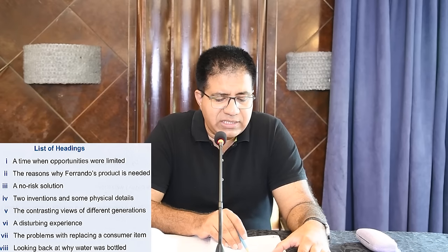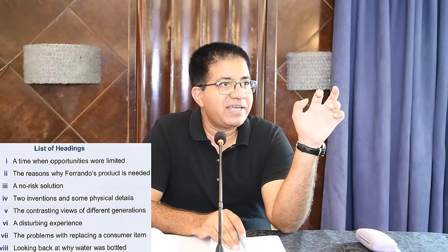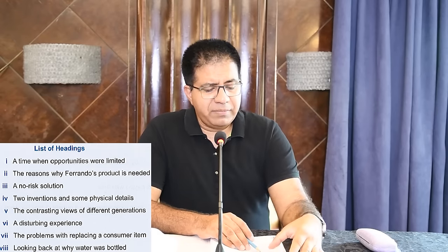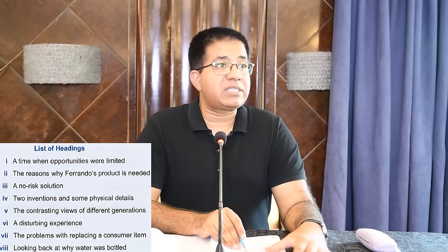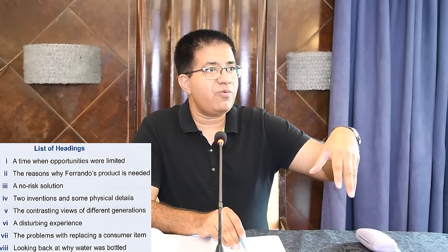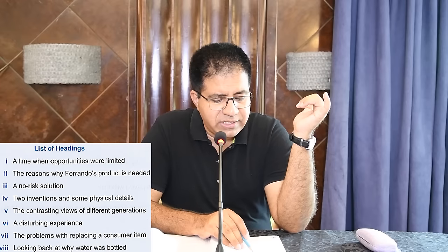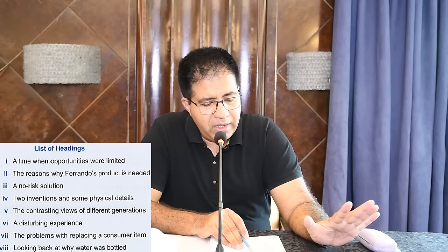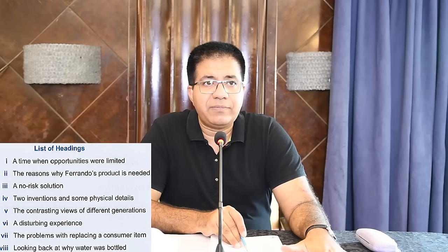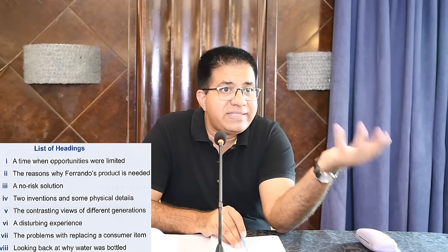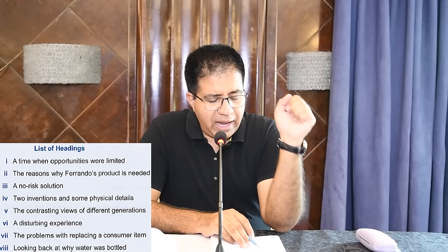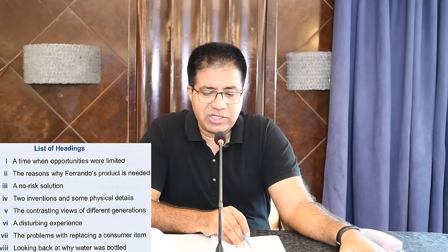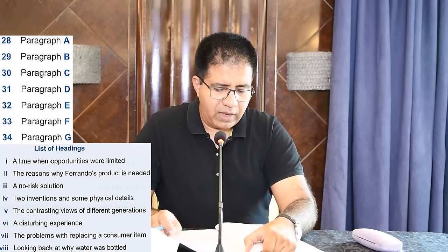Heading number four: 'Two Inventions and Some Physical Details' — bicycle helmet and glass bottle, two inventions with physical details. Heading number five: 'Contrasting Views of Different Generations' — previous generation's view versus current generation's view — contrasting means opposite views. Heading number six: 'Disturbing Experience' — some sort of disturbing experiment or experience. Heading number seven: 'Problems with Replacing a Consumer Item' — a consumer item and the problem to replace it. Heading number eight: 'Looking Back at Why Water Was Bottled' — why water was bottled in the past.